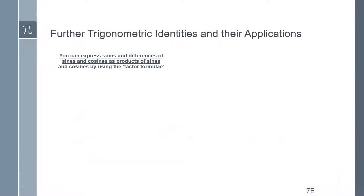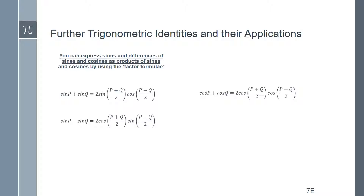Further trig identities and their applications: expressing the sums and differences of sines and cosines as products of sines and cosines by using the factor formula. Here they are: sine p plus sine q is 2 sine((p+q)/2) cos((p-q)/2). Sine p minus sine q is 2 cos((p+q)/2) sine((p-q)/2). Cos p plus cos q is 2 cos((p+q)/2) cos((p-q)/2). And cos p minus cos q equals minus 2 sine((p+q)/2) sine((p-q)/2).